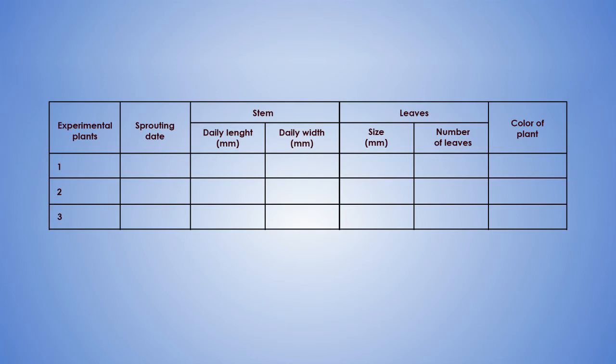For example, for plant one of the experimental plants, you record the sprouting date, the daily length of stem in millimeters, the daily width of stem in millimeters, the size of leaves in millimeters, the number of leaves, and the color of the plants. You do the same for all the other plants for the number of days under consideration. Now the two sets of plants will develop very differently.